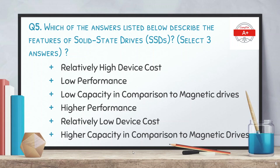Question number five: which of the answers listed below describe the features of solid state drives? Select three answers. The options are relatively high device cost, low performance, low capacity in comparison to magnetic drives, high performance, relatively low device cost, and higher capacity in comparison to magnetic drives. The answers are relatively high device cost, low capacity in comparison to magnetic drives, and high performance.